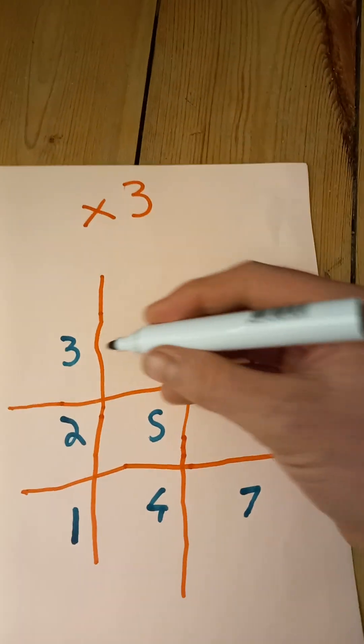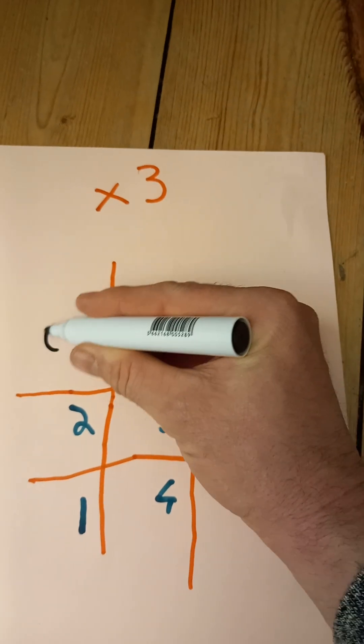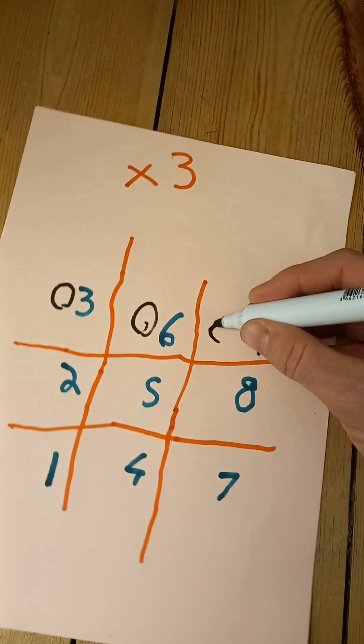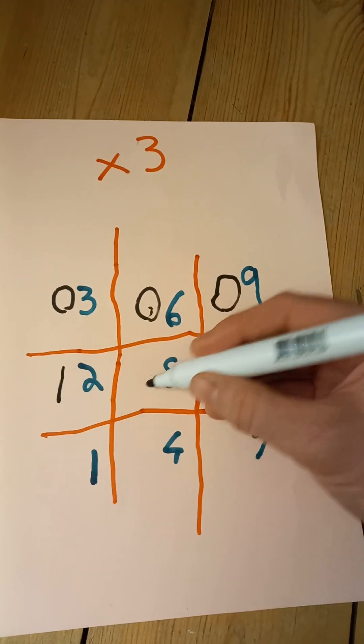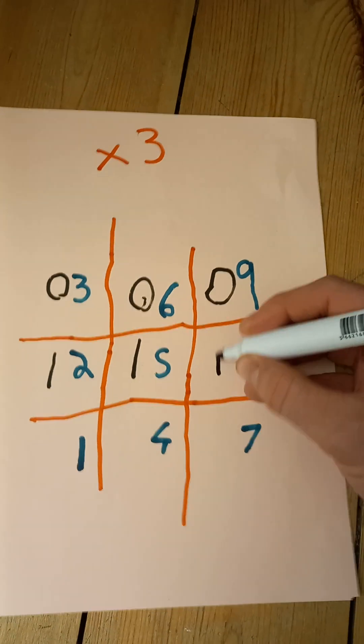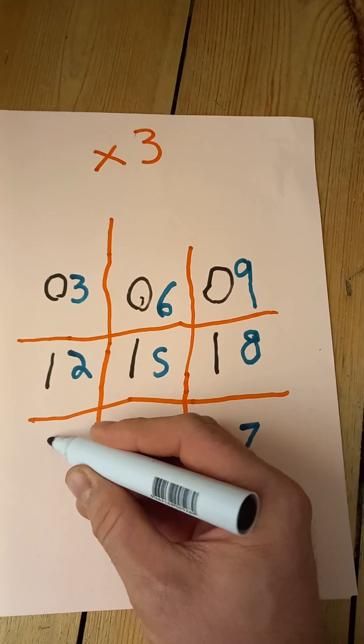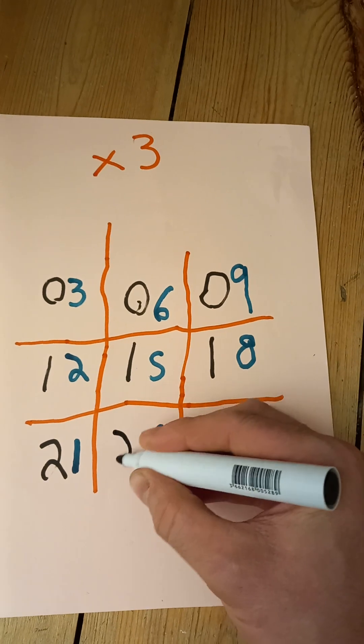And then in the first row we're going to write zeros. The second row, next row down, ones. And then the final row, twos.